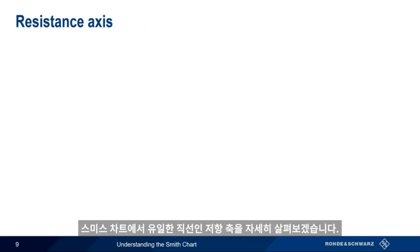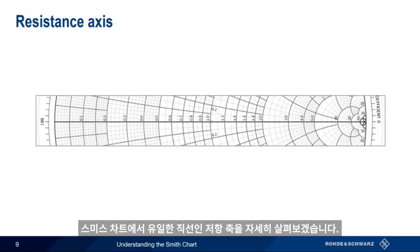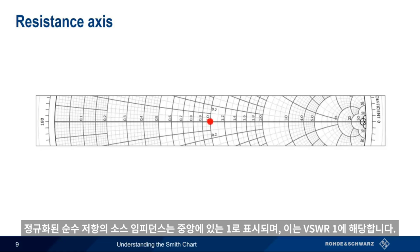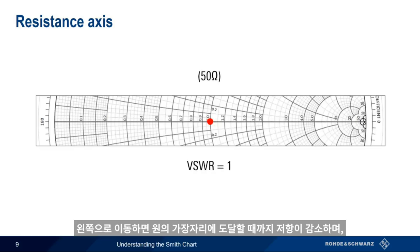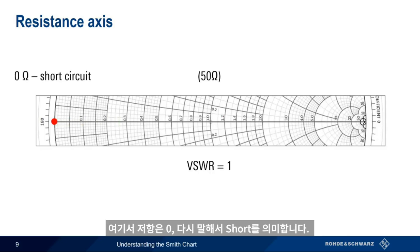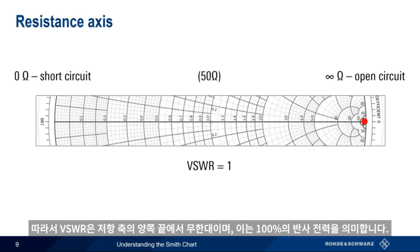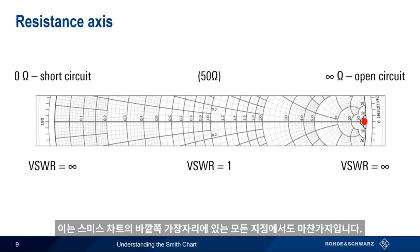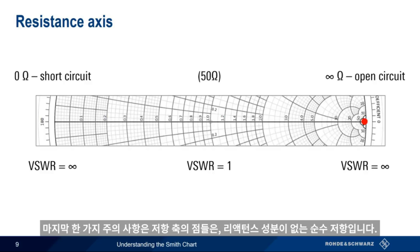Let's take a closer look at the resistance axis, the only straight line on the Smith Chart. Remember that our normalized, purely resistive source impedance is represented by the 1 in the center, and corresponds to a VSWR of 1. Moving to the left, resistance decreases until it reaches the edge of the circle, where resistance equals zero — in other words, a short circuit. Moving to the right, the resistance increases until it reaches infinity, or an open circuit. Therefore, VSWR is infinite on either end of the resistance axis, meaning 100% reflected power. This is also true at any point along the outer edge of the Smith Chart. Points on the resistance axis are pure resistance with no reactive part.